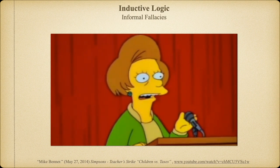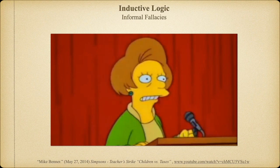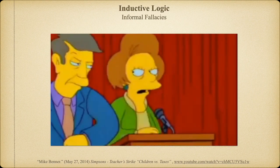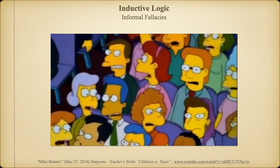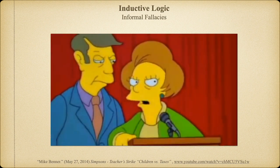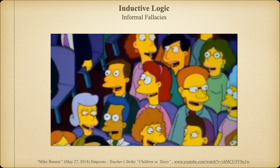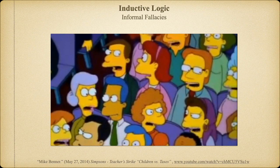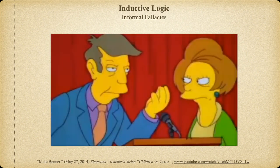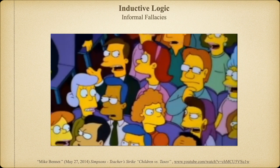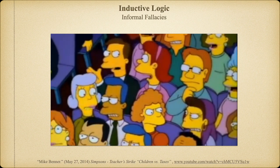In this clip, a union representative presents simple demands — a small cost of living increase and better equipment and supplies for children. The response frames the situation as requiring a tax raise, which is immediately opposed as taxes being too high. The debate collapses into a binary: support the students or raise taxes. So here we have a fallacious argument set up as an exclusive choice between supporting students or raising taxes, but there's really no reason whatsoever to assume that these choices are mutually exclusive.